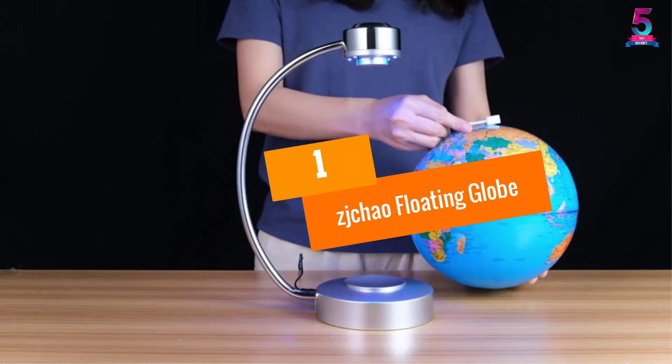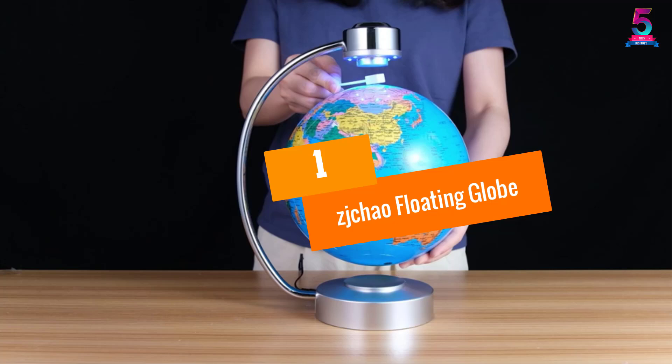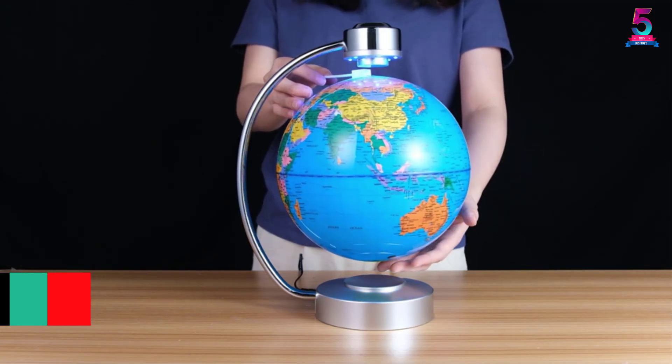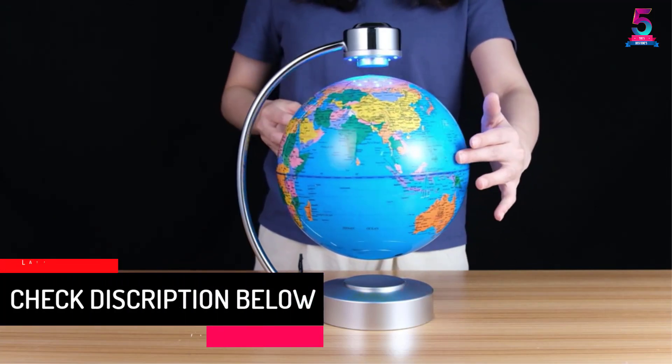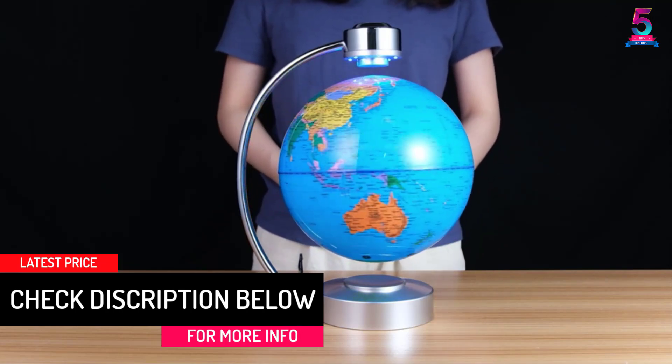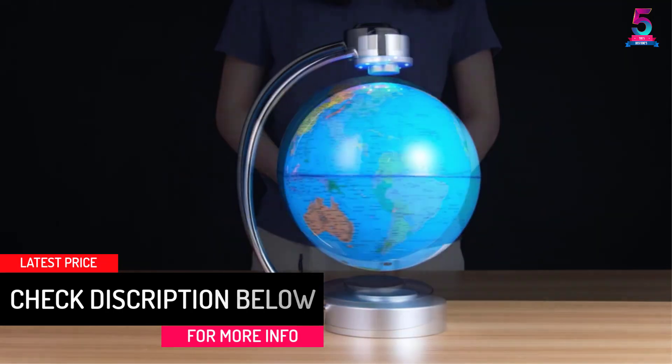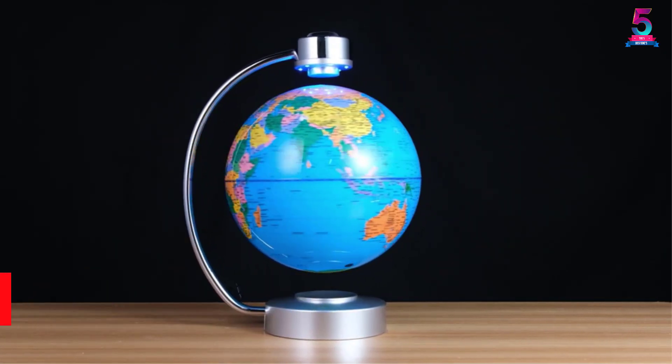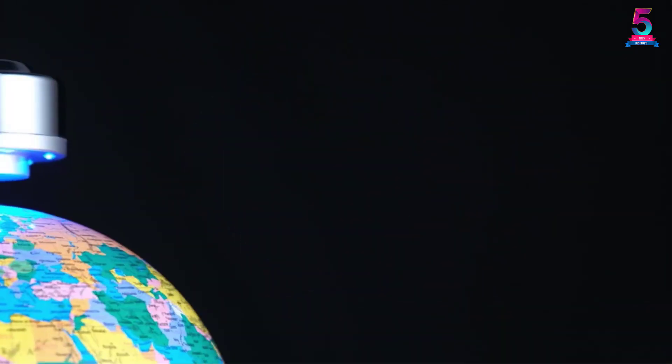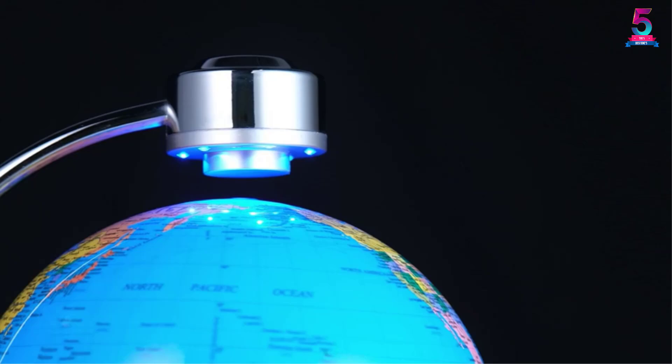At number 1, C.J. Chow Floating Globe. C.J. Chow offers you a floating globe that doesn't just appeal to elementary school kids, but also to adults as an attractive desk piece. Firstly, it has a sturdy ABS base which is smooth and lightweight compared to metal. It is also less vulnerable to water and dirt exposure.